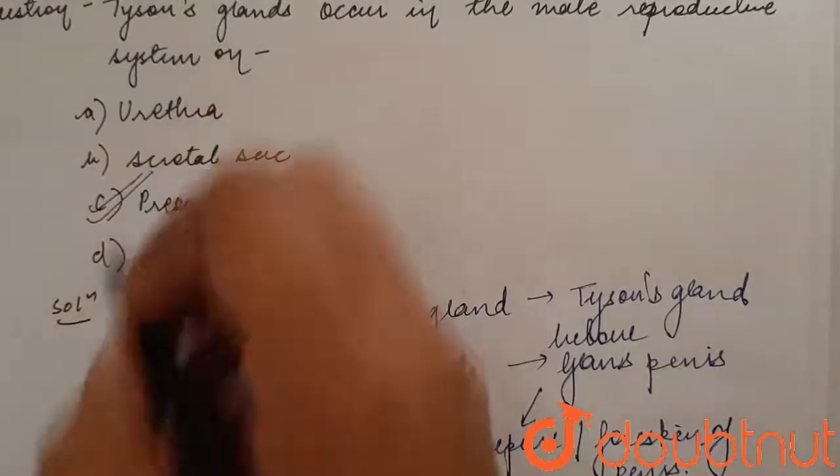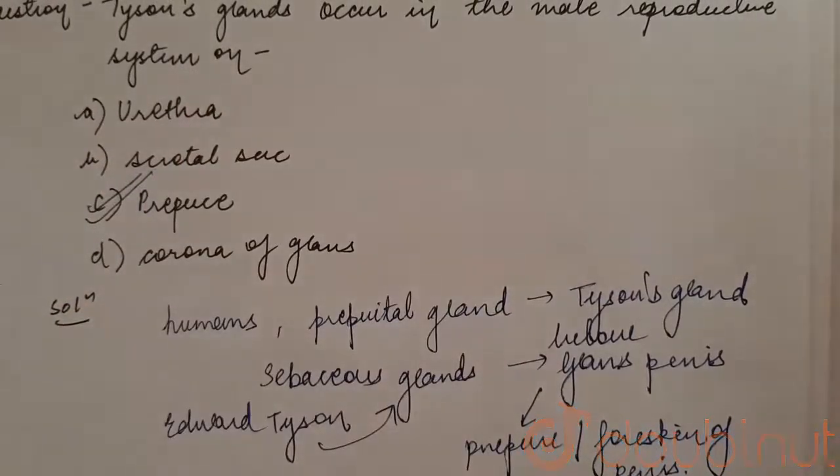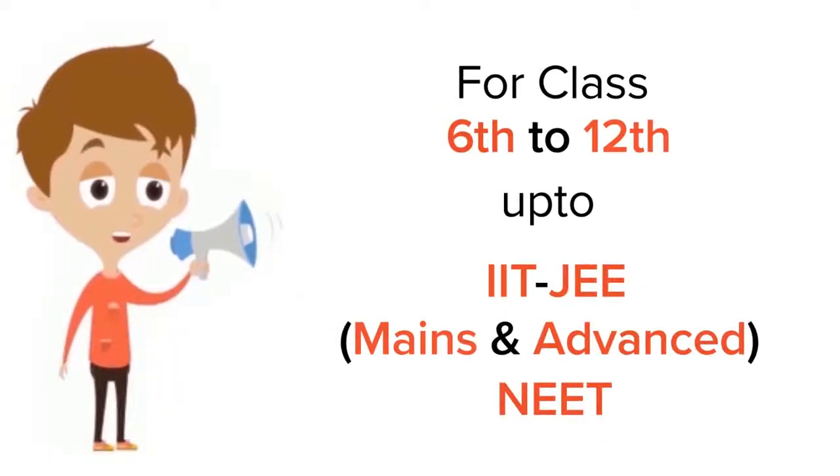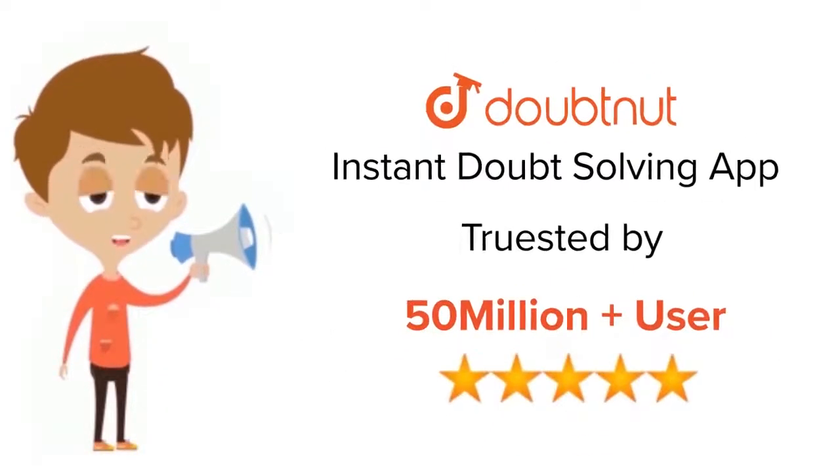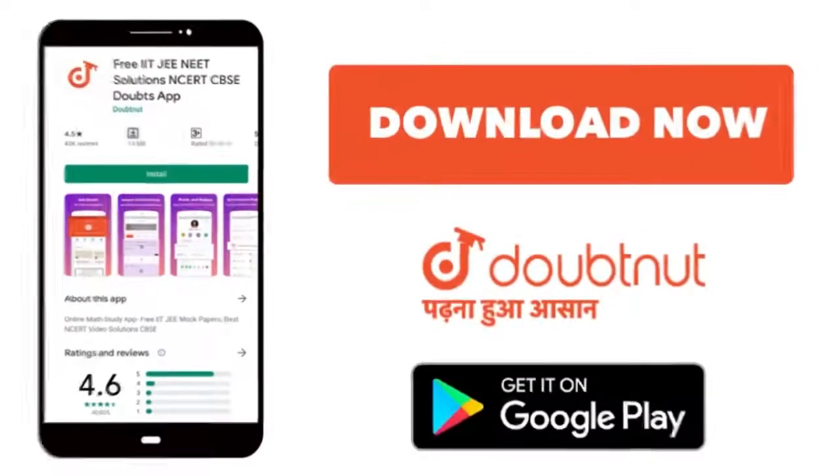Thank you. For class 6 to 12, IIT-JEE and NEET level, trusted by more than 5 crore students. Download Doubtnet app today.